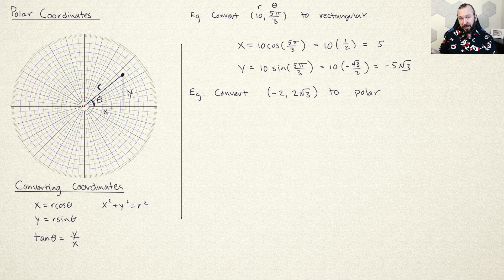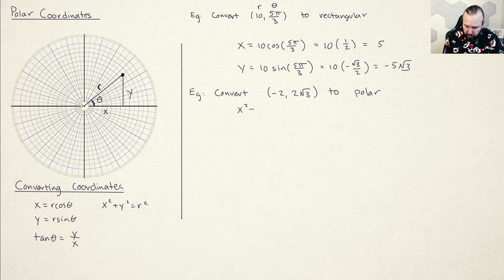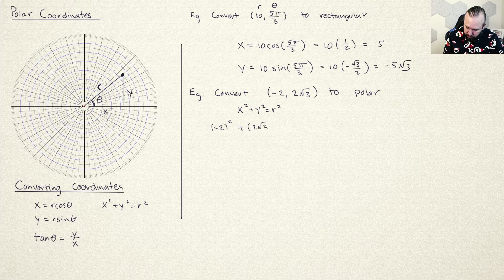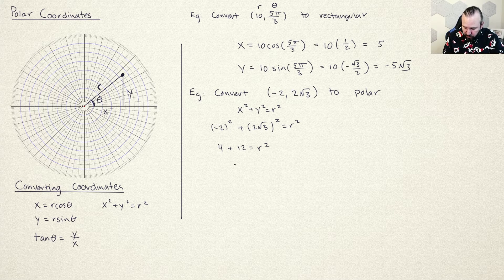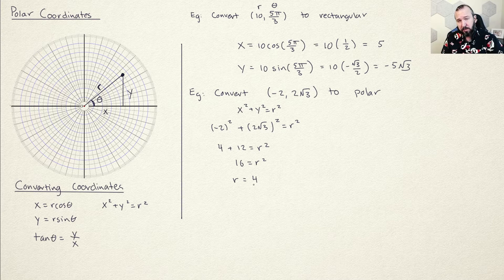Now let's convert a rectangular coordinate into a polar coordinate. Given the point negative 2 comma 2 square root of 3, we need to find r and theta. Using x squared plus y squared equals r squared: negative 2 squared plus 2 square root of 3 squared equals r squared. That gives 4 plus 12 equals r squared, so r squared equals 16, meaning r is plus or minus 4. Given the choice, I'll take the positive r value of 4, though there is more than one correct answer.